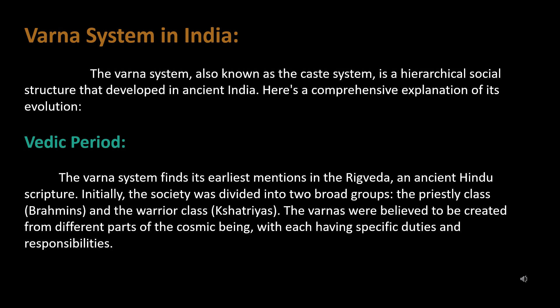Initially, society was divided into two broad groups: the priestly class, Brahmins, and the warrior class, Kshatriyas. The Varnas were believed to be created from different parts of the cosmic being, with each having specific duties and responsibilities.